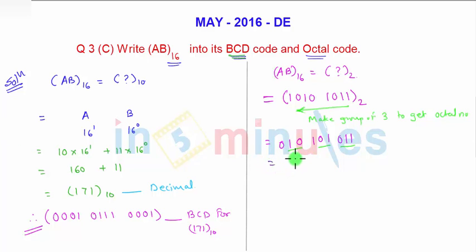As 2, 5, 3 so this is the required octal number for the number AB hexa.